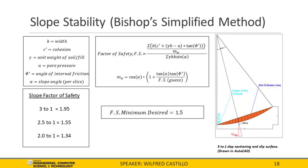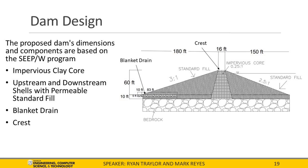We used the finite element analysis program GeoStudio to analyze a 2D cross section of our dam. From the geotech report, we know there is bedrock 10 feet below the surface. Our dam shall be 60 feet high with a downstream slope of 3-to-1 and upstream slope of 2.5-to-1. The dam shall be made of sand fill, on-site material/clay, and a blanket drain. The dam shall have an impervious core with slopes of 0.25-to-1 from the top of the dam to the bedrock, requiring excavation 10 feet below the existing surface. The blanket drain shall be 5 feet below the existing surface with a total length of 93 feet, including 10 feet past the toe of the dam.